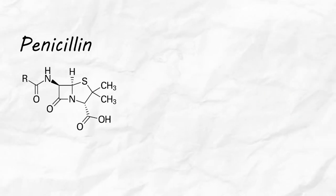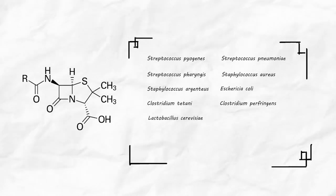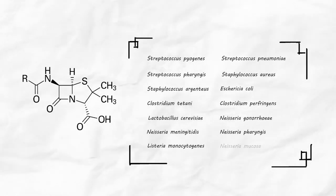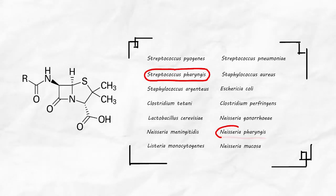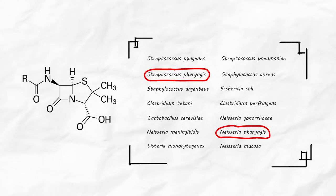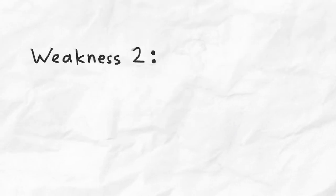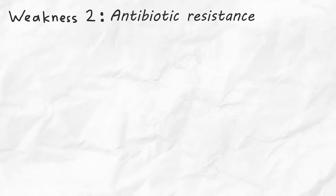For instance, the penicillin antibiotics we have known are able to kill certain bacteria. Typically, a doctor prescribes penicillin to kill only one or two specific bacteria, but it may affect others as well.